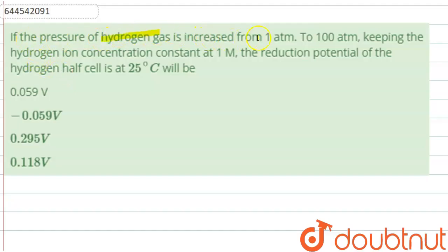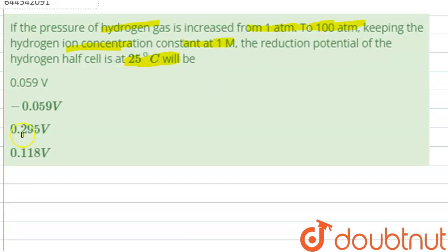The question is: If the pressure of hydrogen gas is increased from 1 atm to 100 atm, keeping the hydrogen ion concentration constant at 1 molar, the reduction potential of the hydrogen's half cell at 25 degrees Celsius will be?